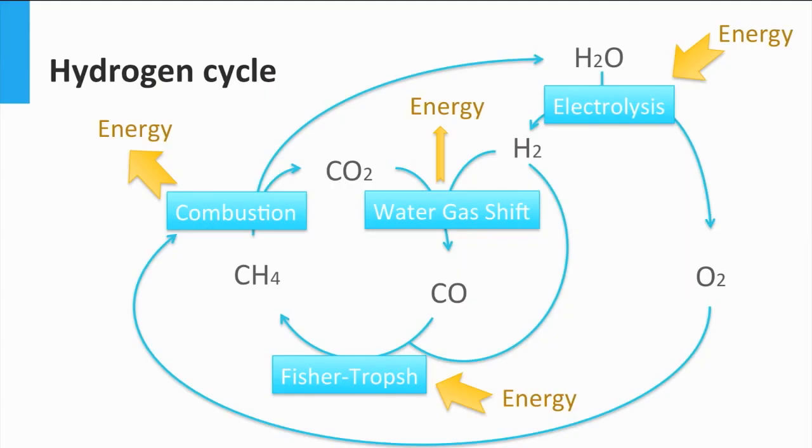Each reaction and each process of the cycle will have a certain efficiency, and their overall efficiency is the combination of all those efficiencies. Now that we know why we want to produce hydrogen, let's see how we can do it with solar energy.